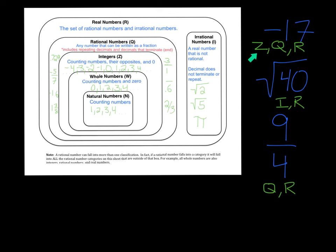Negative 17 is an integer, it's rational, and it's real. The square root of 40 is irrational, don't let this I confuse you, and real. And 9 fourths is rational and real.